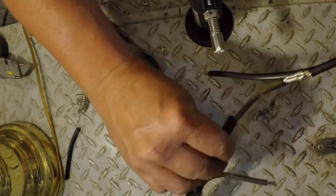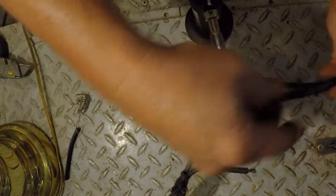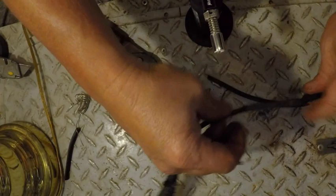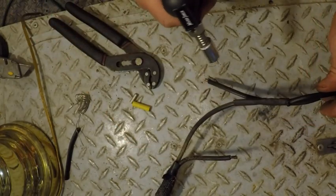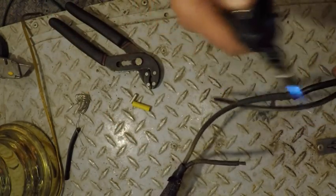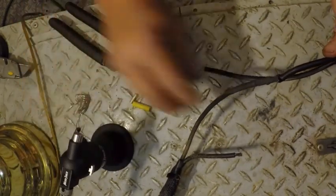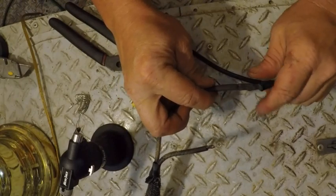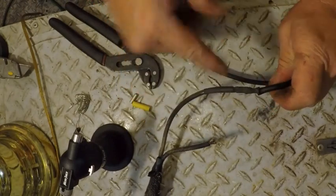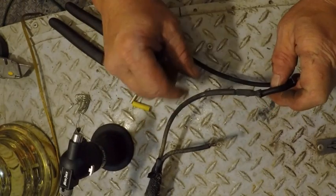Then after you get that part done, you just slide your heat shrink over the top of it as quickly as you can. It's a little warm. Heat it. There you go, solid connection.